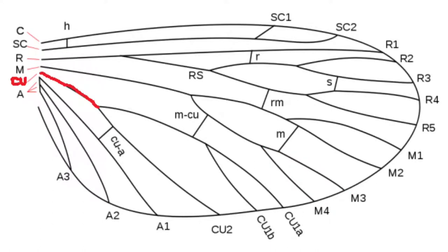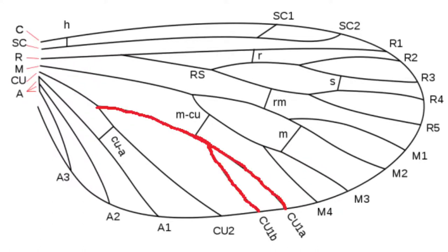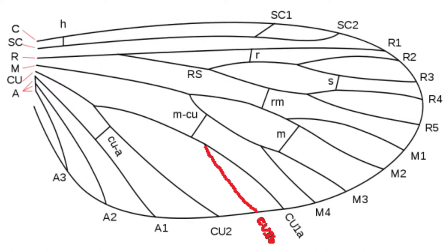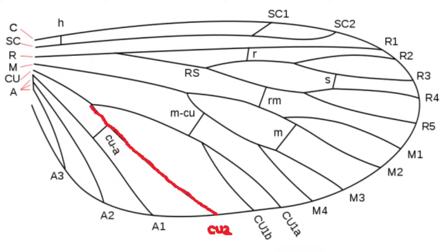Now we're moving down again to the cubitus. First, the cubitus itself splits off into CU1, but then CU1 splits off into CU1a and CU1b. The second branch of the cubitus is called CU2.